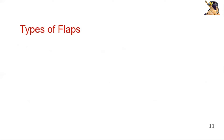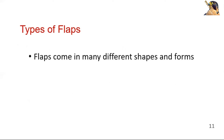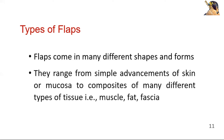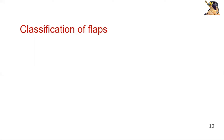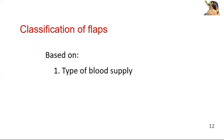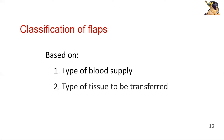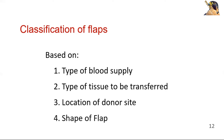What are the types of flaps? Flaps come in many different shapes and forms. They range from simply a skin or mucosa to composites of many different types of tissues, for example, muscle, fat, and fascia. We can classify flaps based on: type of blood supply, type of tissue to be transferred, location of donor site, and shape of flap.